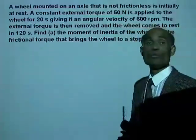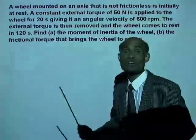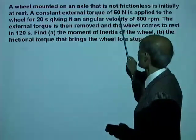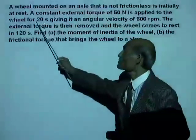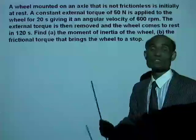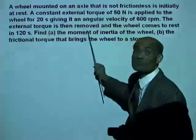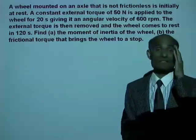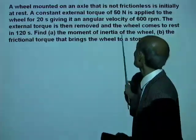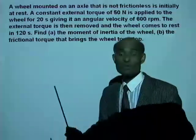Problem 2: A wheel mounted on a non-frictionless axle is initially at rest (ω₀ = 0). A constant external torque of 50 N·m is applied for 20 seconds, giving it an angular velocity of 600 RPM. The external torque is then removed, and the wheel comes to rest in 120 seconds. Find: A) the moment of inertia of the wheel, and B) the frictional torque.